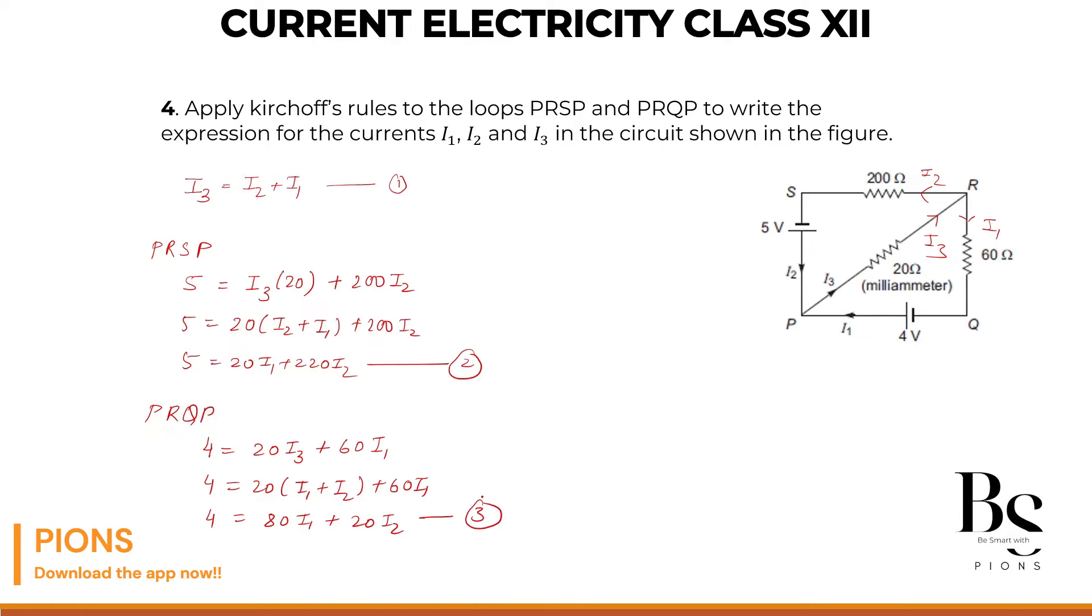Now if I multiply equation number 2 with 4, I will get 20 equals 80 I2 plus 880 I2. And the second one will be 4 equals 80 I1 plus 20 I2. Let's subtract both. Minus, minus, minus, minus, cancel down. 16 equals 0, 8 minus 2, 6 and 860 I2. So current I2 will be equals to 16 upon 860.